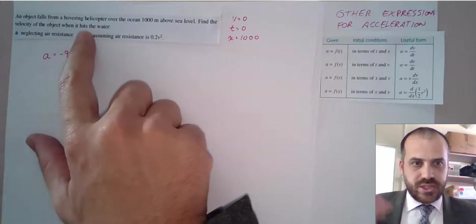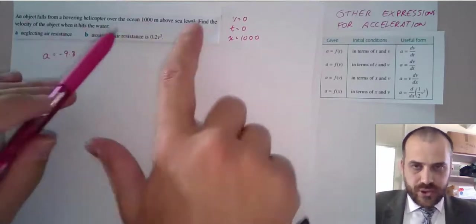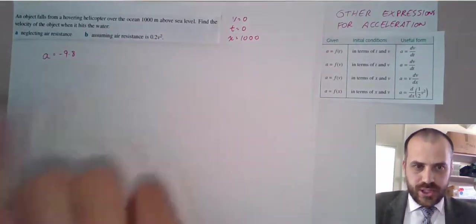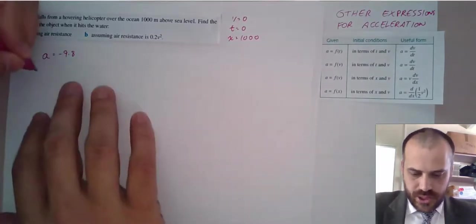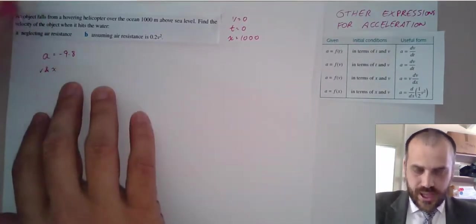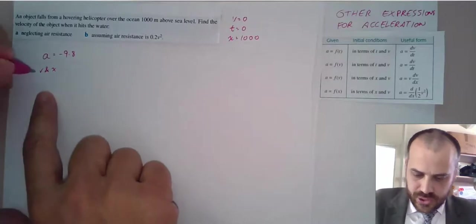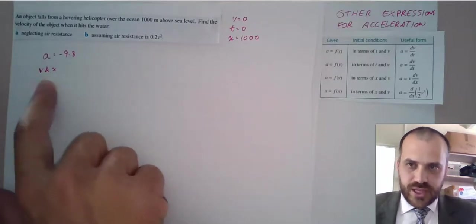Find the velocity of the object when it hits the water. So when its position is zero, find the velocity. So we want some relationship or some relation between V and X.